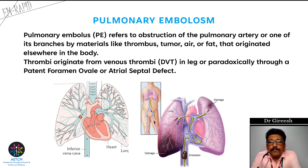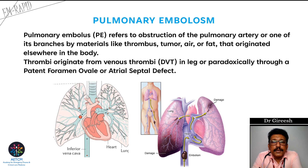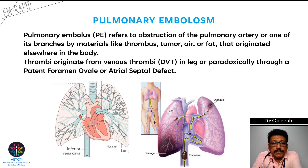Pulmonary embolism means obstruction of the pulmonary artery or one of its branches by a thrombus, tumor, hair, or fat, which may originate from other parts of the body — especially deep vein thrombosis from the lower limbs. Sometimes it can travel through a foramen ovale or atrial septal defect.